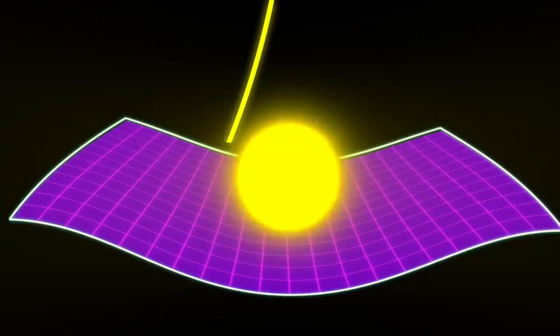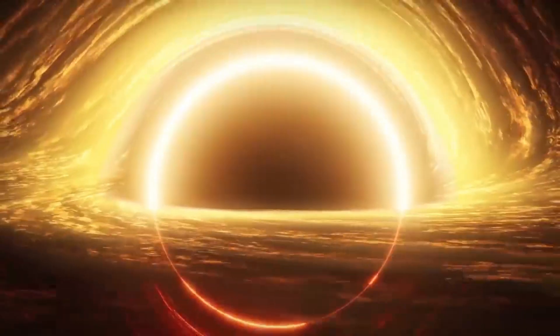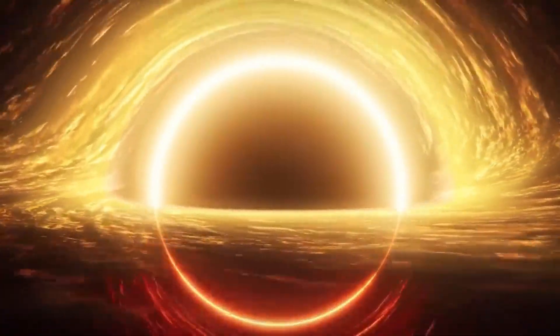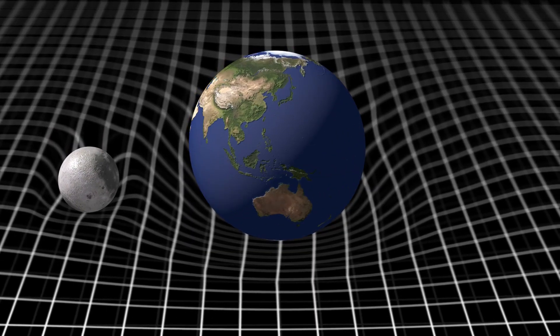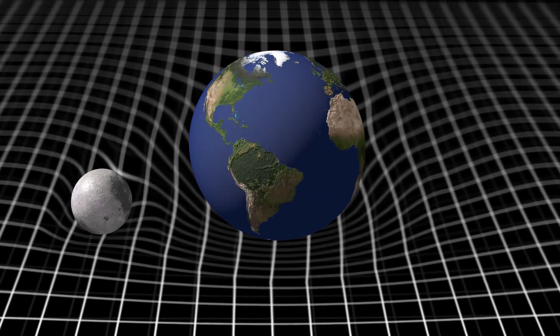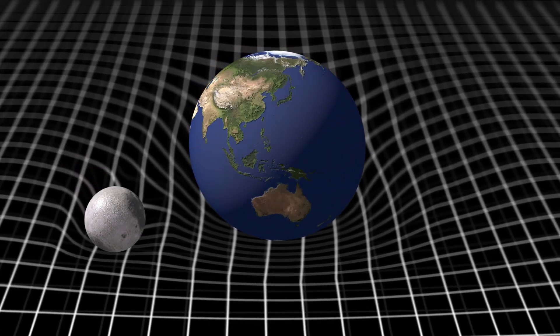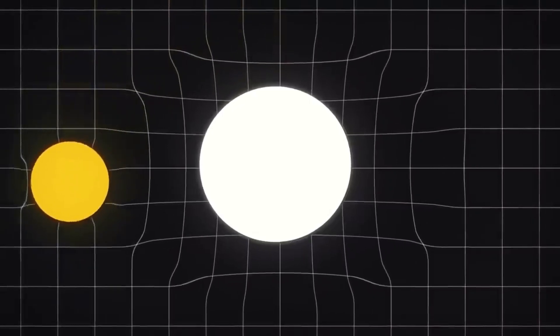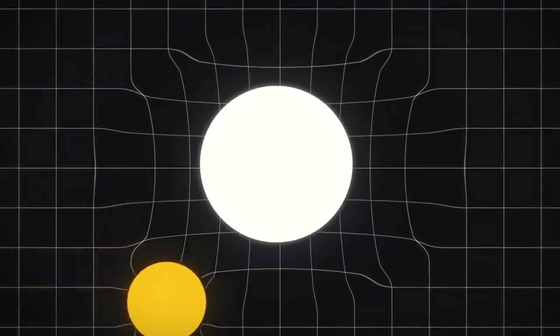This is why light can bend around stars and why time ticks slower near black holes. In Einstein's equation, the metric tensor field replaces the old idea of gravity as a force. Gravity becomes geometry, a field that shapes everything.